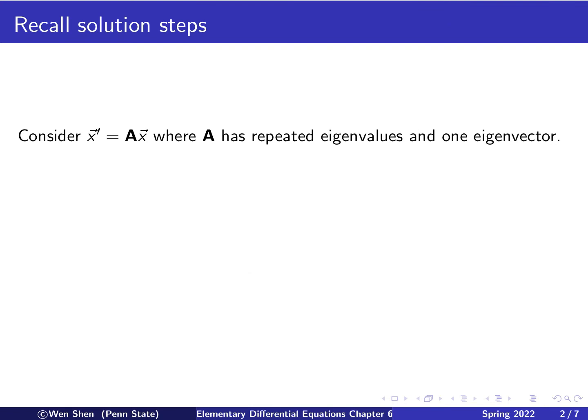In this video, we will go through one more example for improper nodes. Before that, let's do a quick review of the solution steps. So consider this equation x' equal to Ax, where we know A has repeated eigenvalue and one eigenvector.